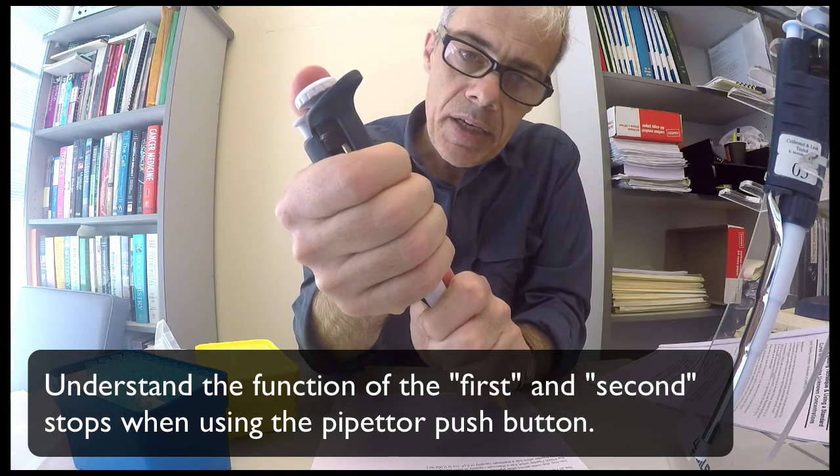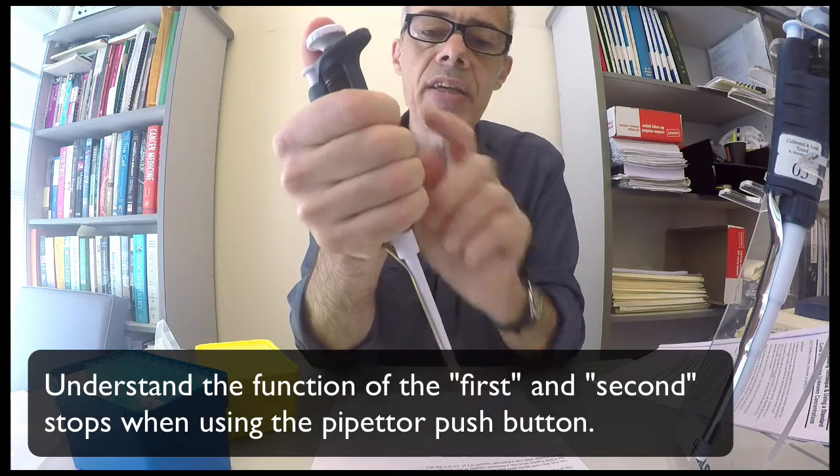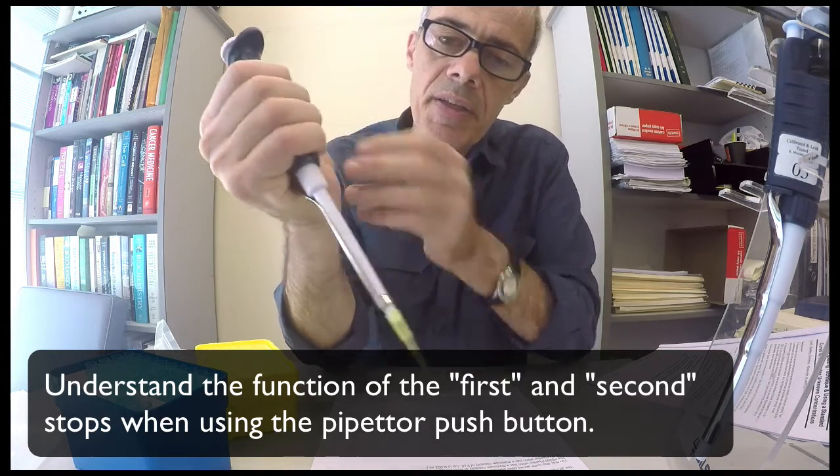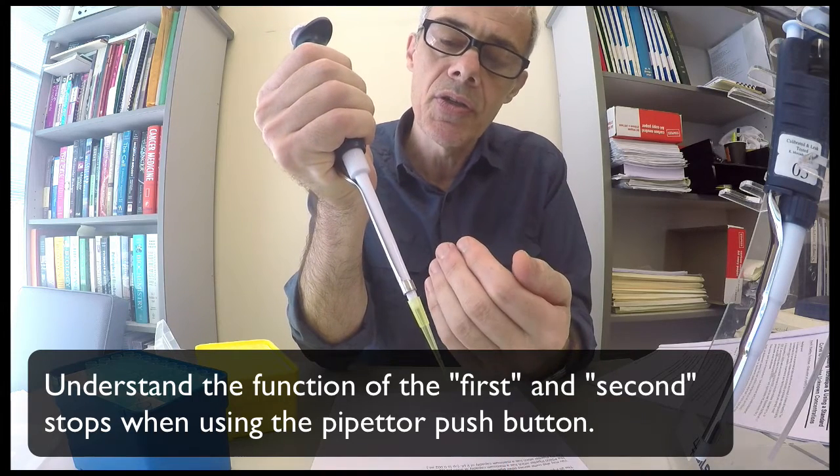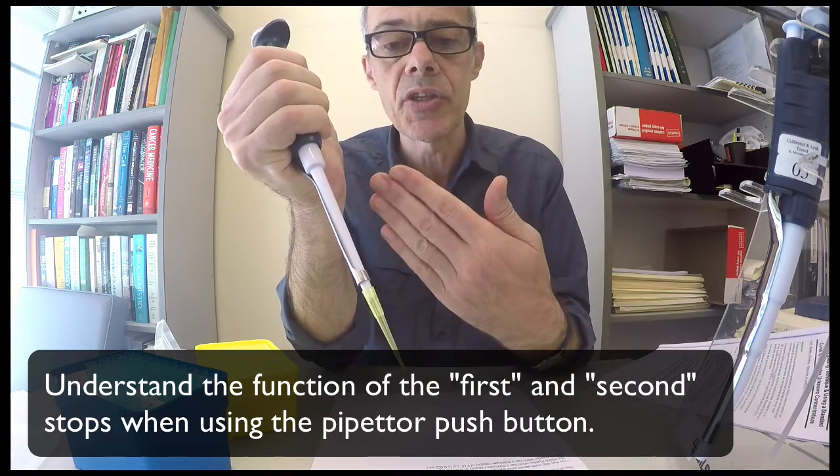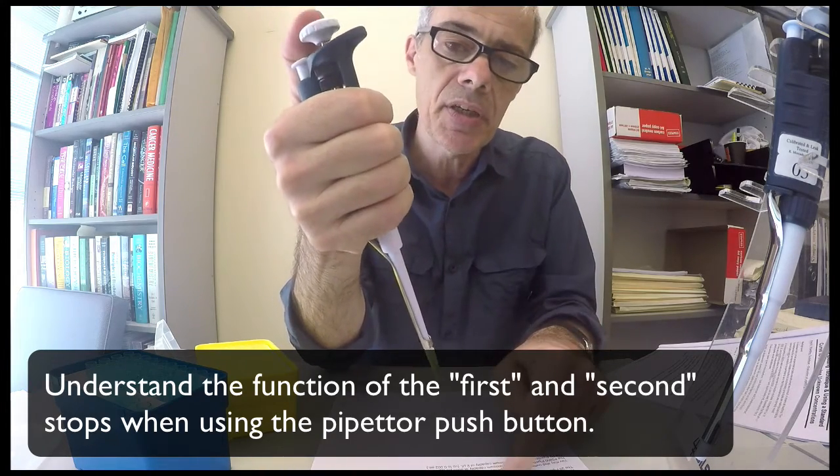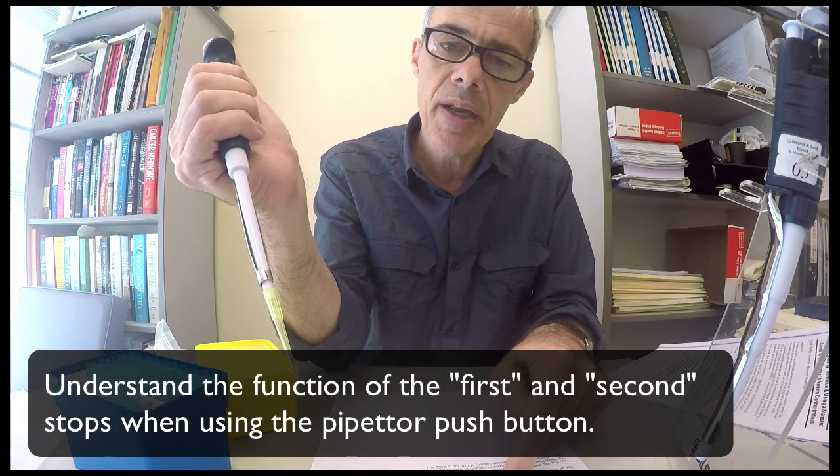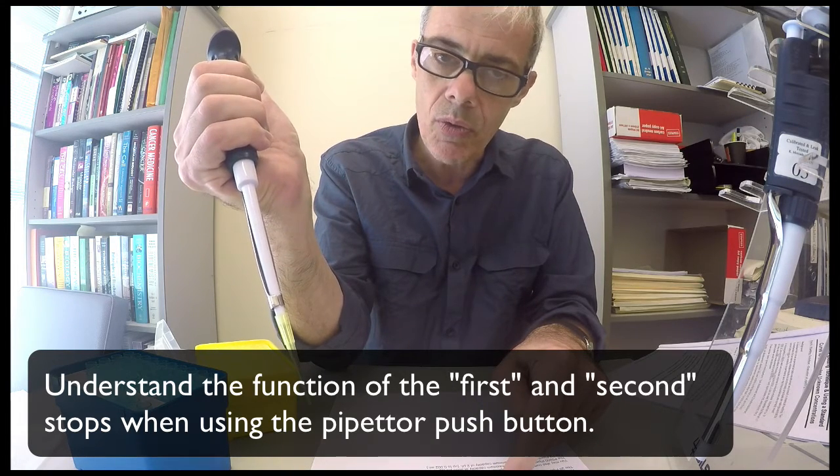The second position is not calibrated, it's just an extra bit of push that dispenses a little bit more air out to expel the solution from the tip. So you don't use that when you're drawing the solution up. You only use the calibrated position to draw the solution up and then when you dispense you dispense all the way down.